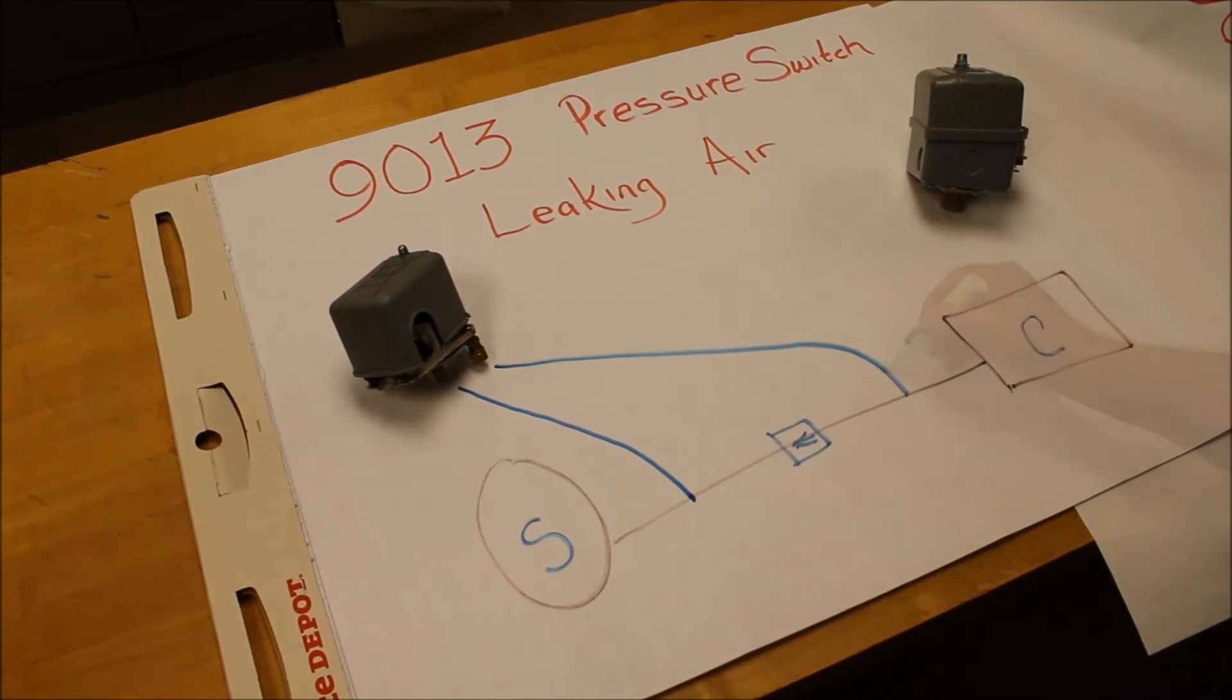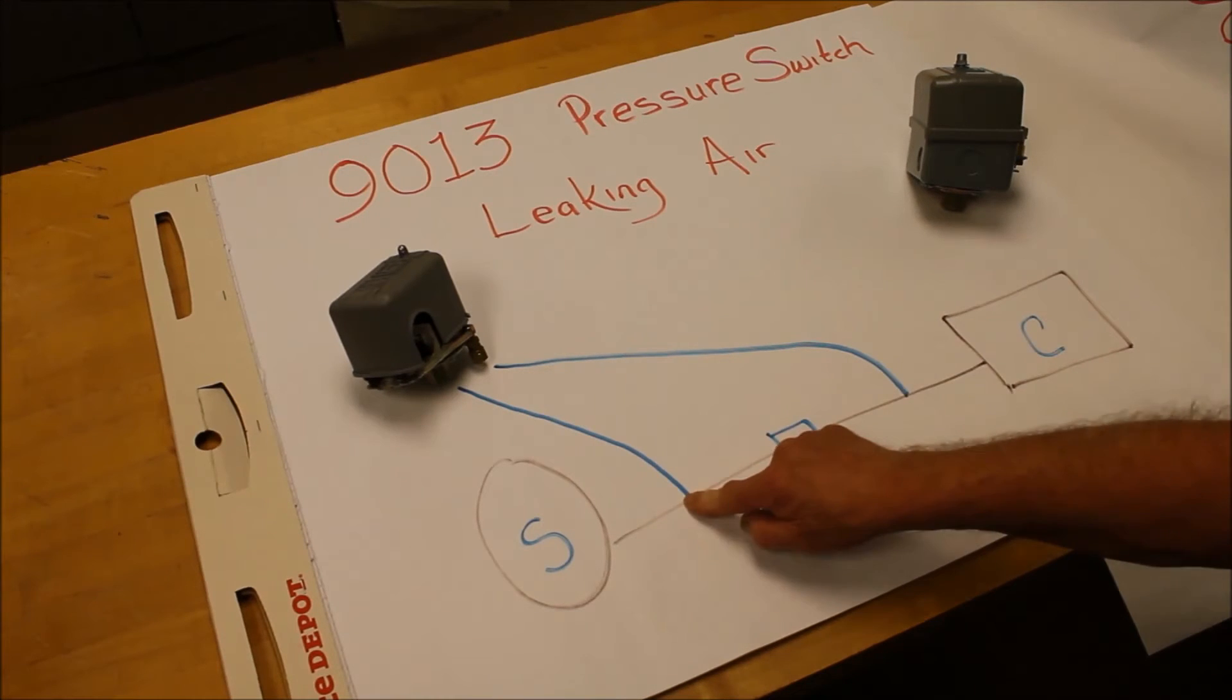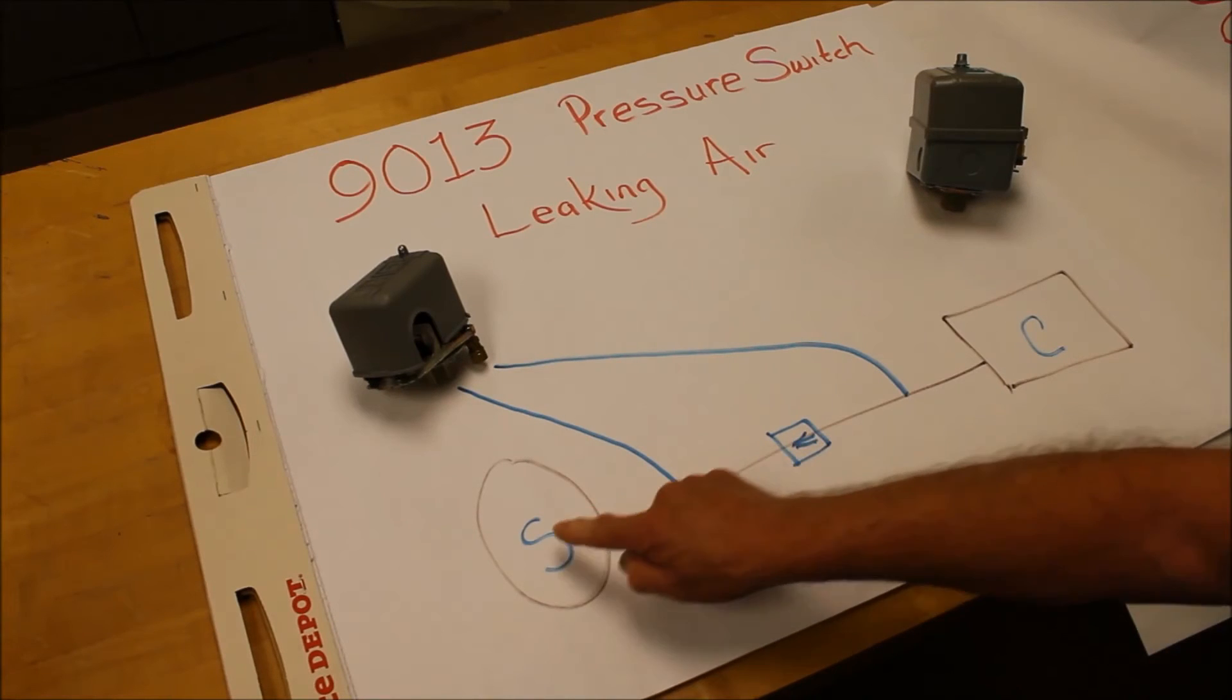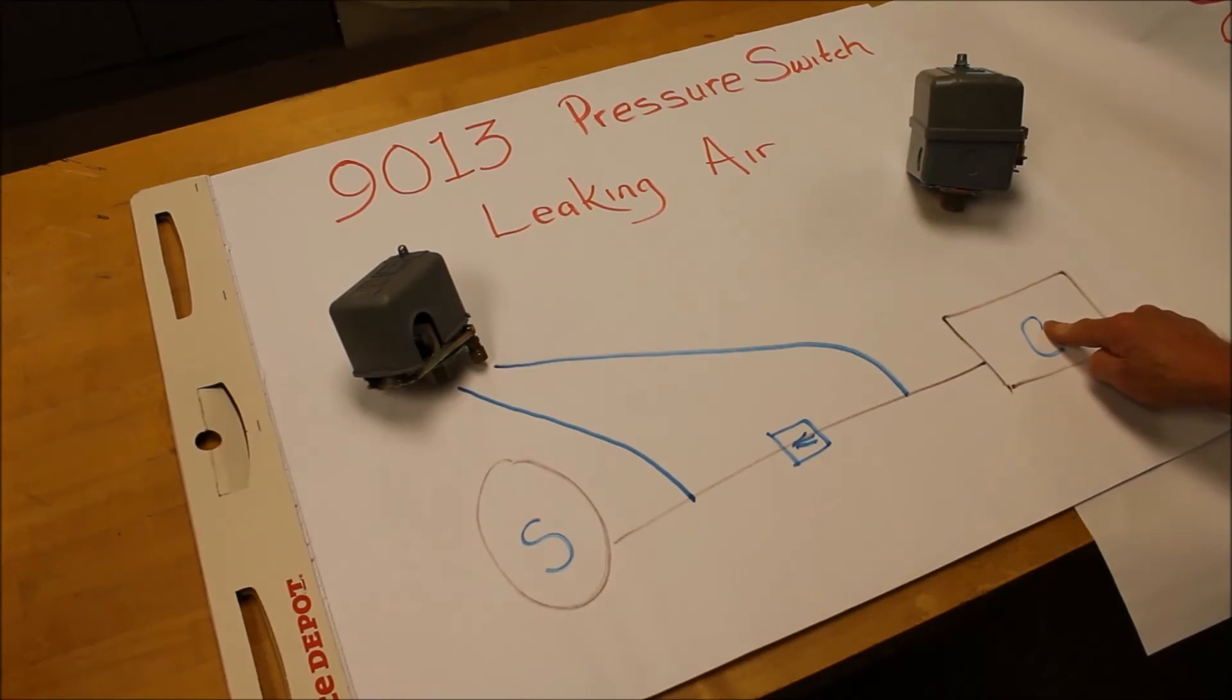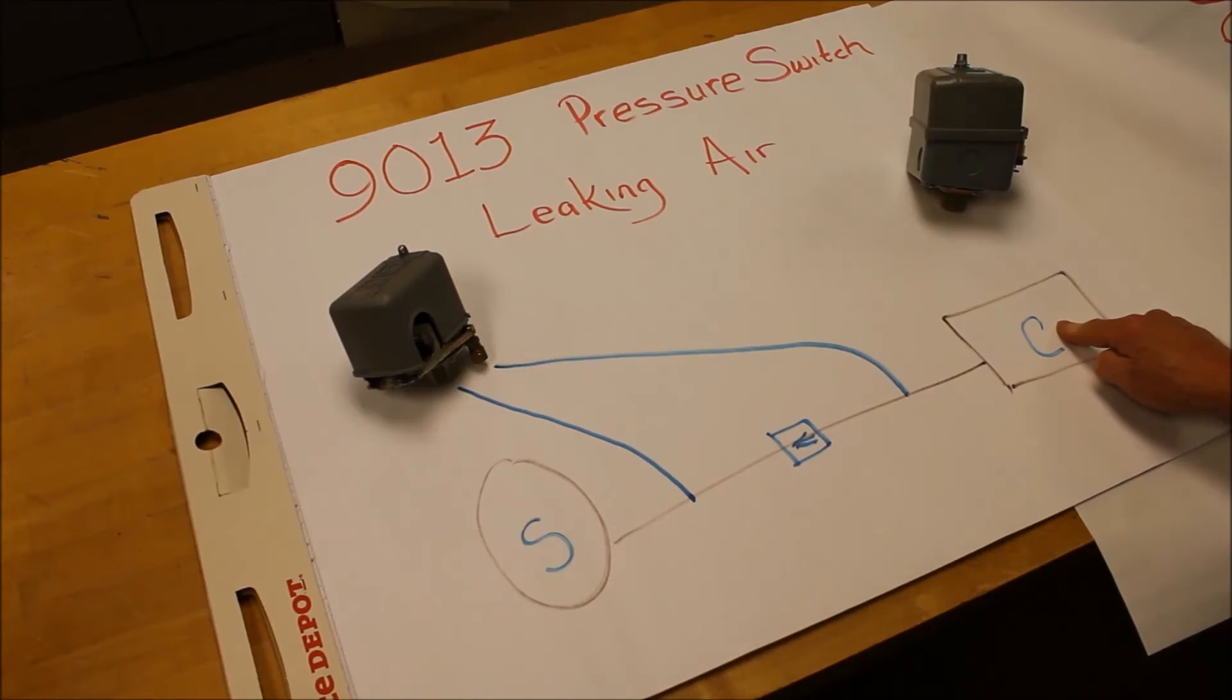The check valve must be installed between the bleed valve connection and the main pressure valve connection. If it is not, the storage tank will back feed to the compressor and you will have a constant filling of the tank and discharge until it is totally empty.